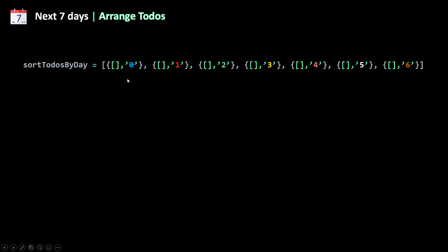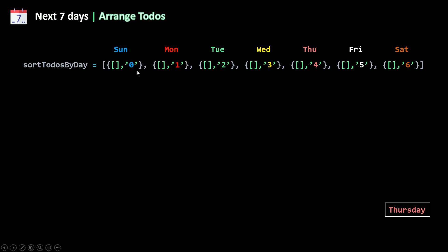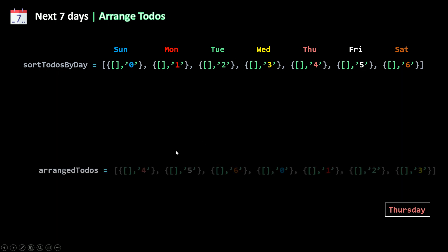After sorting our to-dos by day we get an array where each day is an object with its to-dos inside an array and the number of the day as a string. From that string we can figure out the name of the day. If today is Thursday, I'm going to show Thursday's to-dos first, then Friday, Saturday, Sunday, Monday, Tuesday, and Wednesday. We need to arrange this array so it starts from four, which is Thursday.